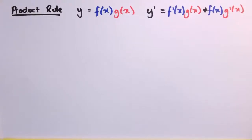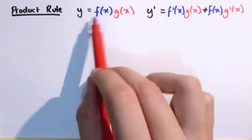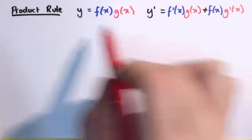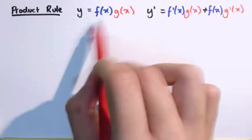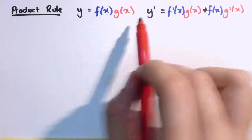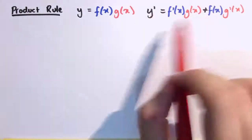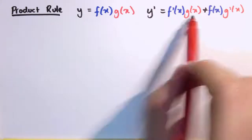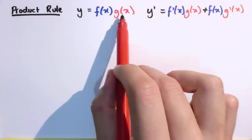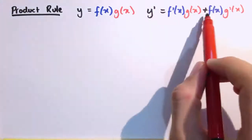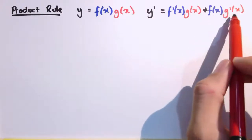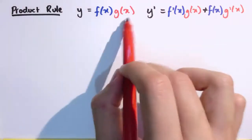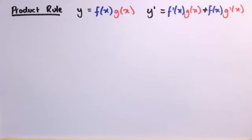The product rule allows us to differentiate a product or a multiplication of two different functions. So we've got a function y, which is f of x times g of x. To differentiate that, the product rule says we do f dashed of x times g of x — differentiate the first part and leave the second part alone — and then add that to f of x times g dashed of x — leave the first part alone and differentiate the second part.